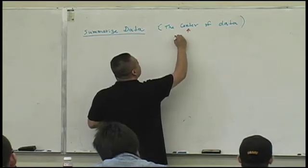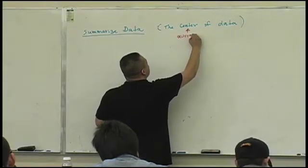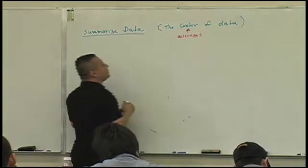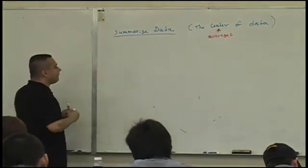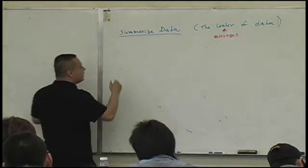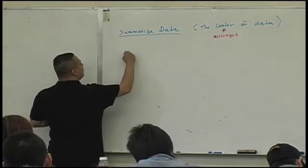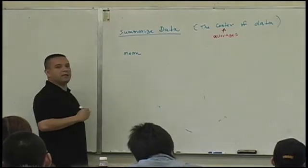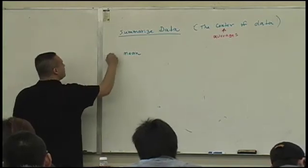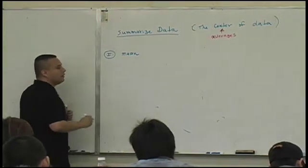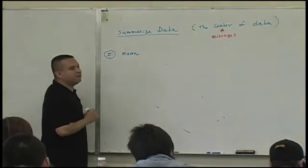We know these things as the averages, meaning there's three averages. The first average is something that we already know and love, the mean. So we'll talk about that first one, the mean of data.